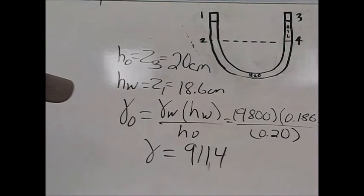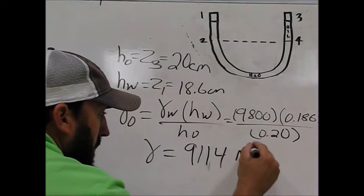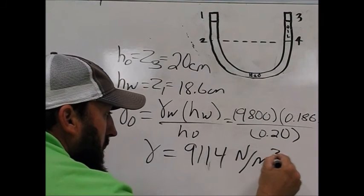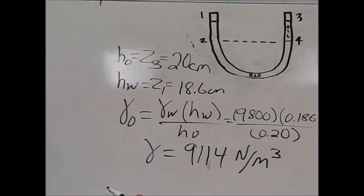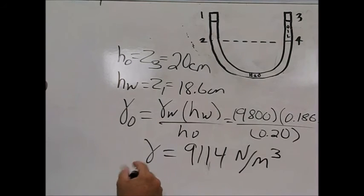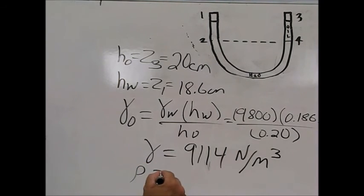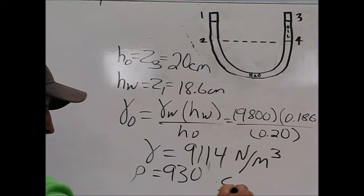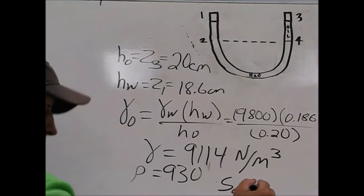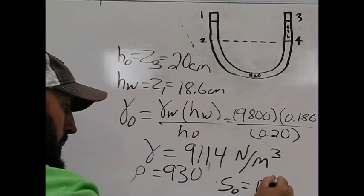Again, the units on that would be newtons per meter cubed. Based off of that number, it's easy to then find the density, which we calculated to be 930. You can also find the specific gravity, which we calculated to be 0.92.